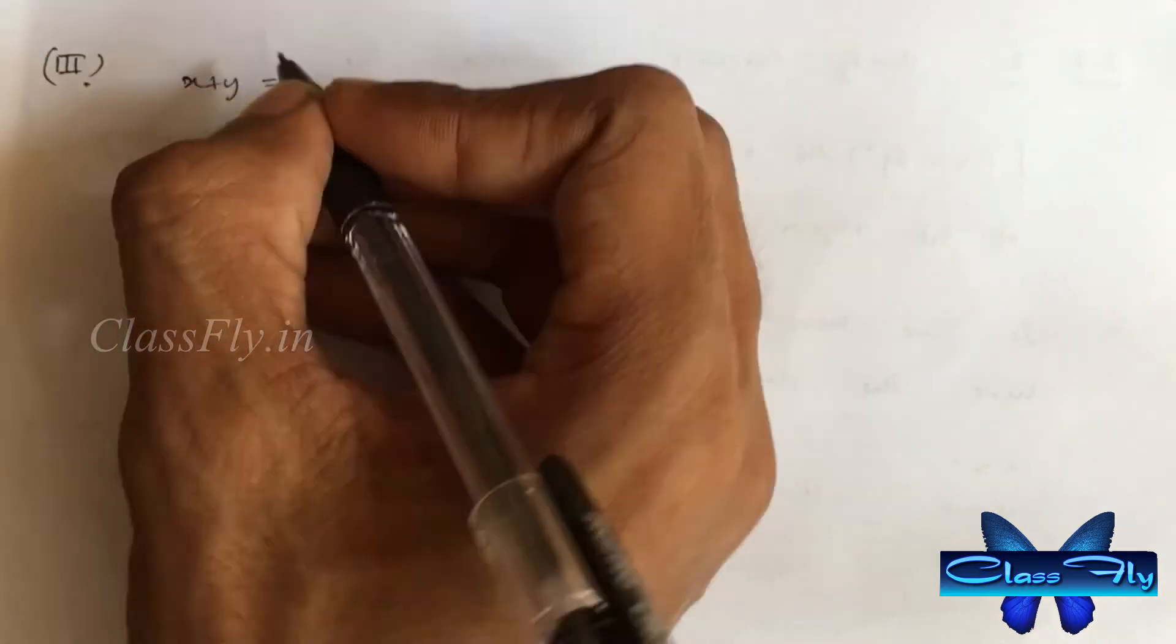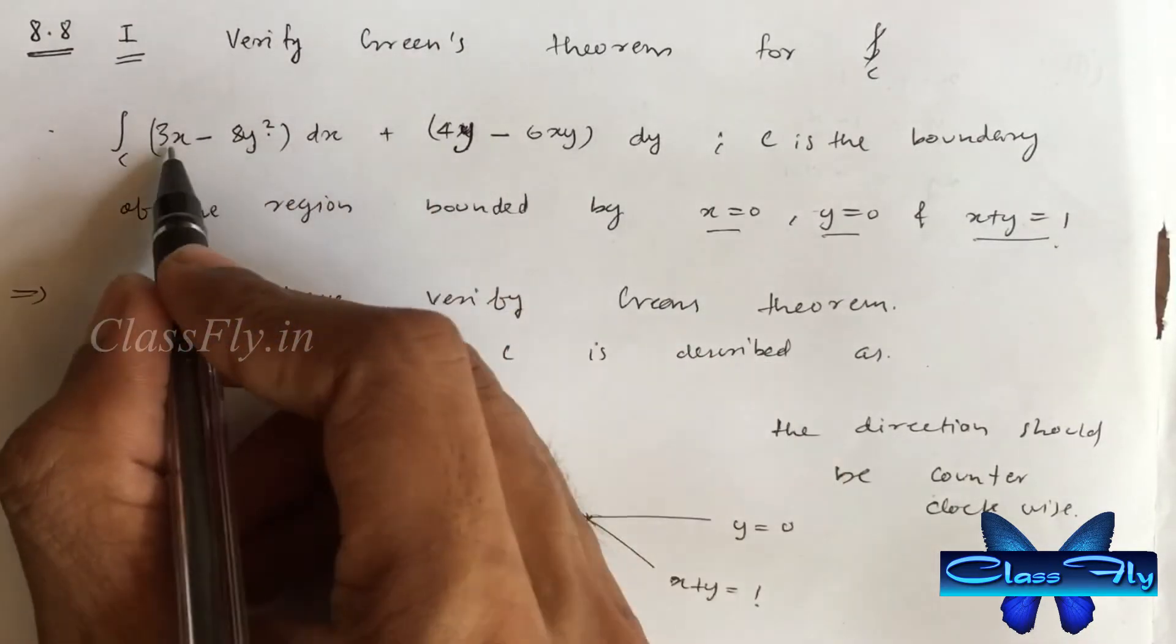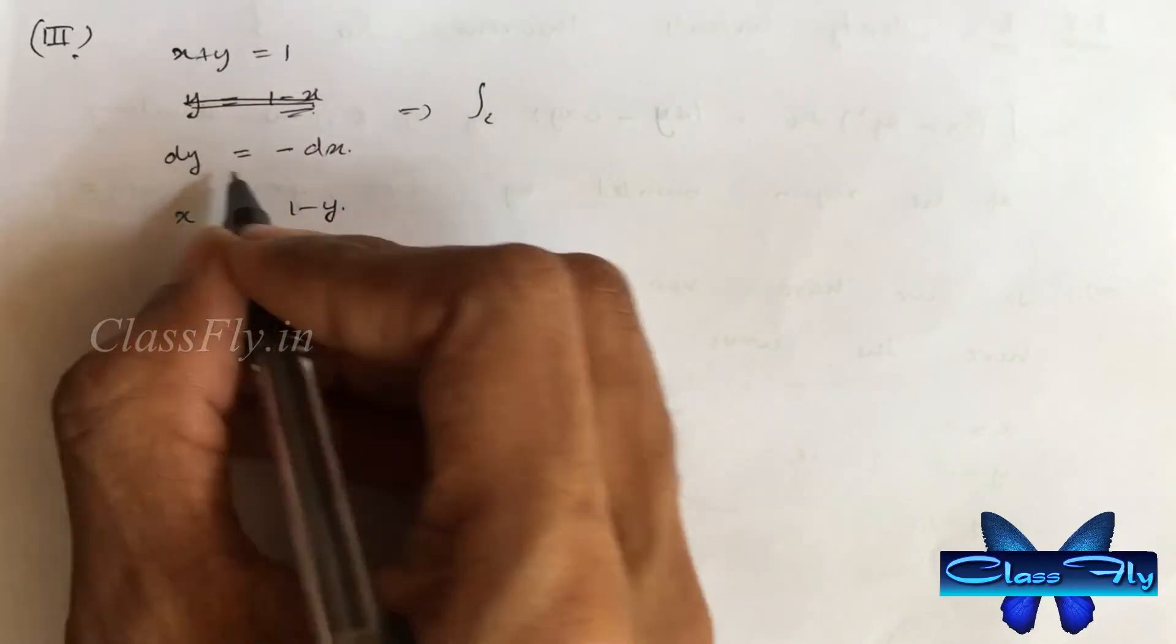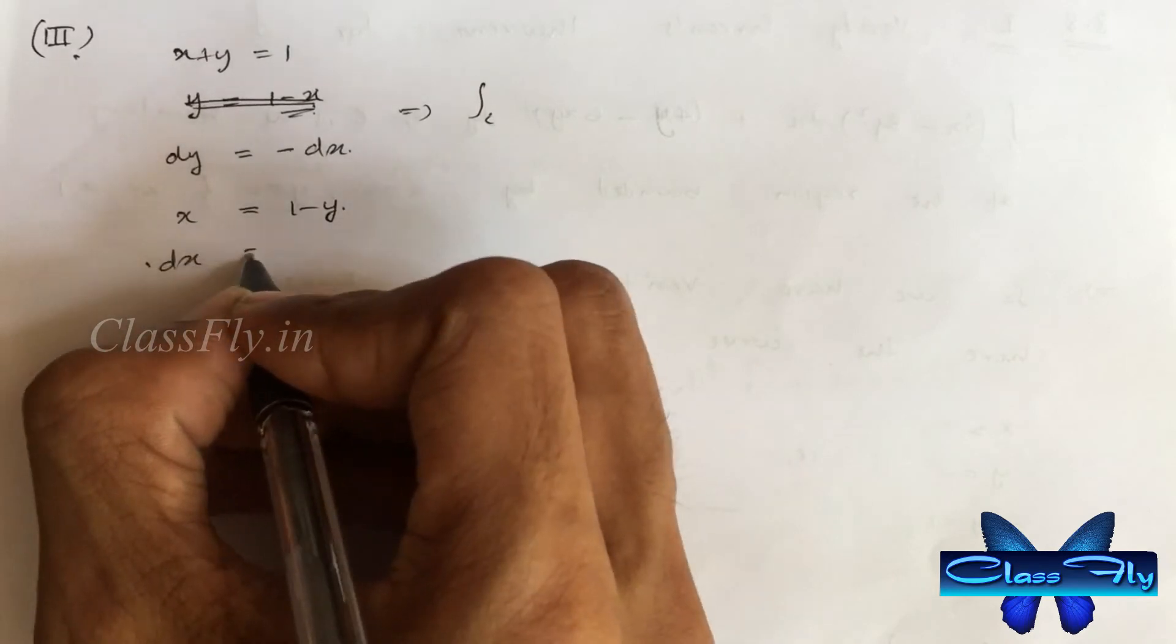And the third one, x plus y equal to 1. Since there is power in the y, we choose x equal to 1 minus y. Therefore, dx is equal to minus dy. And y varies from 0 to 1.